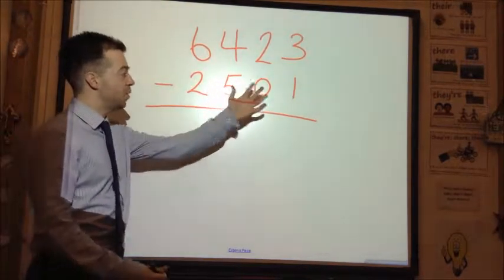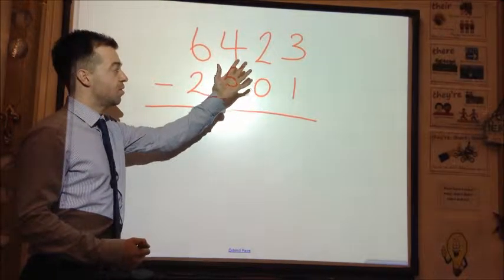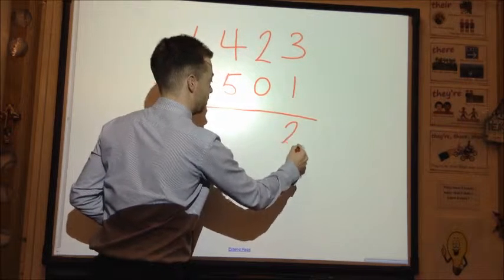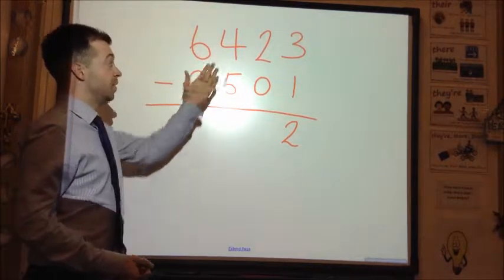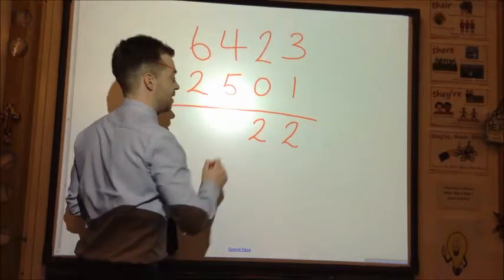Now, as per column addition, we start from the units column, except we're subtracting this time. So 3 take away 1 is 2. We write 2 in the units column. 2 take away 0, again, is 2. We write that in the tens column.